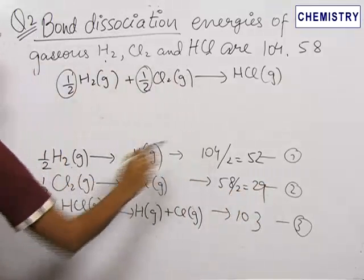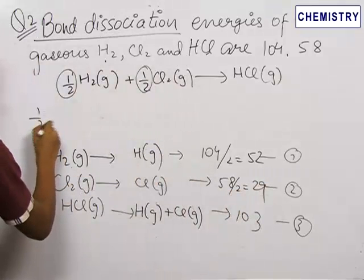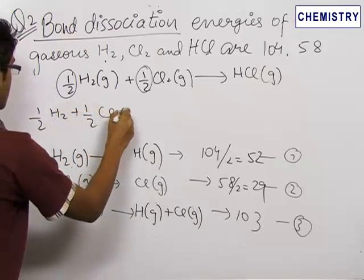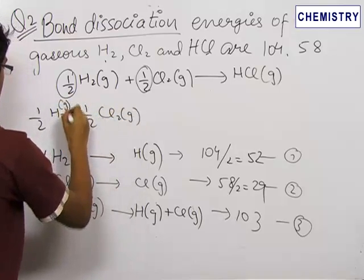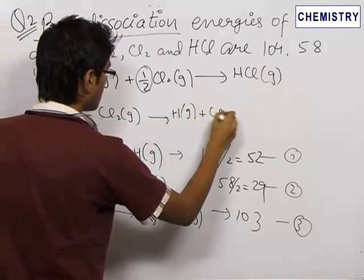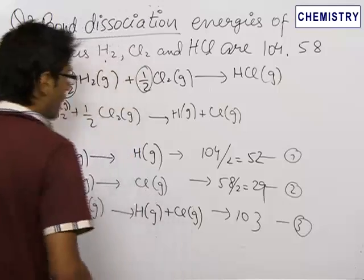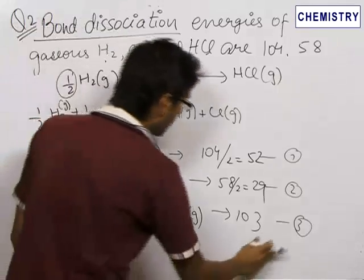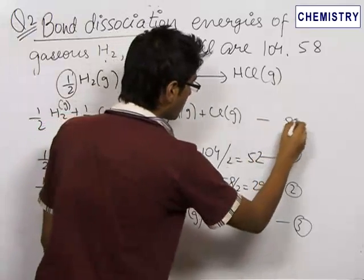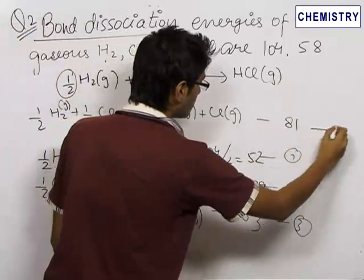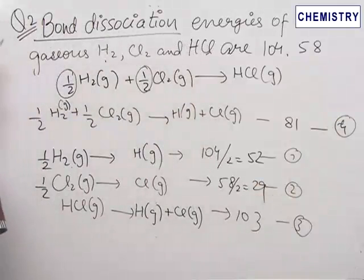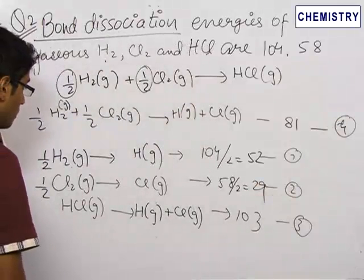Adding these two halved reactions together, we get: ½H₂(g) + ½Cl₂(g) → H(g) + Cl(g), and the enthalpies are added: 52 + 29 = 81 kcal/mol. This is the fourth equation.